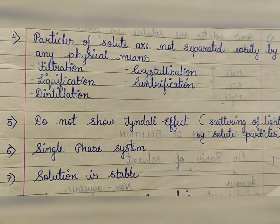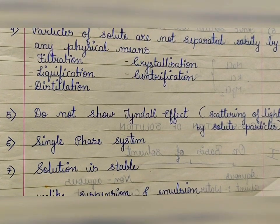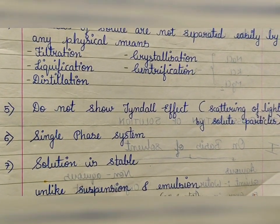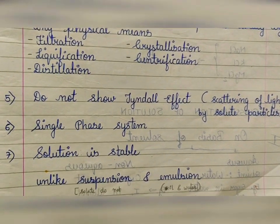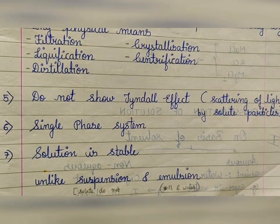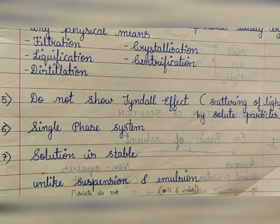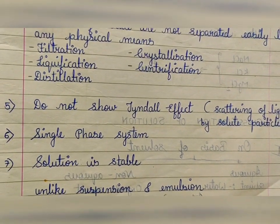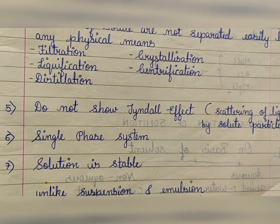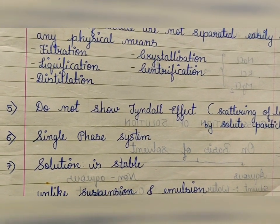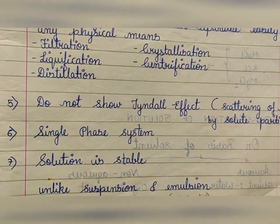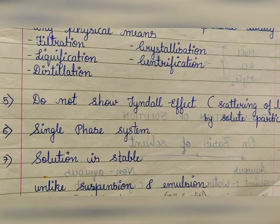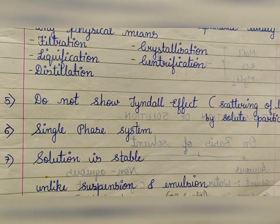You cannot see a two-phase system — it is a single-phase system with uniform physical state. Solution is stable as compared to suspension or emulsion. A suspension is solid particles in liquid — like chalk powder in water. Is it stable? No. Chalk powder will float.